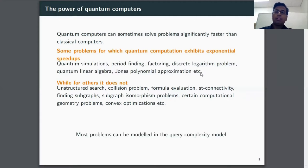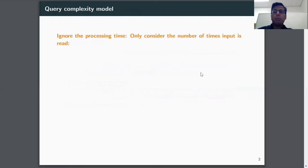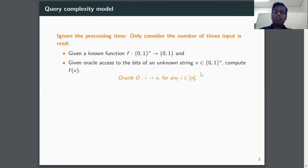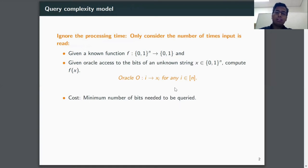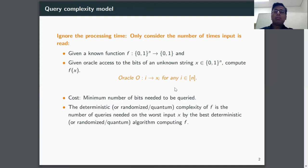We look at this problem in the query complexity model. Most of the problems listed here can be modeled in the query complexity world. In the query complexity model we ignore the processing time and we only consider the number of times the input is read. More formally, we are given a known boolean function f and we are also given oracle access to the bits of an unknown input string x. We query the oracle with an index i and we get back the bit x_i. The cost of computing a function in this model is the minimum number of bits needed to be queried. The deterministic query complexity D(f) is the number of queries needed in the worst case by the best deterministic algorithm for computing f.